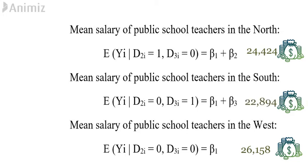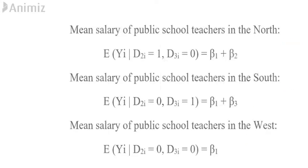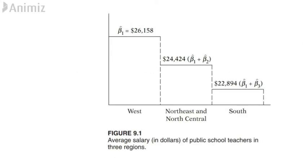For North region we add β1 and β2, and for South we add β1 and β3. The actual mean salaries in the last two regions can be easily obtained by adding these differential salaries to the mean salary of teachers in the West and are about $24,424 and $22,894.